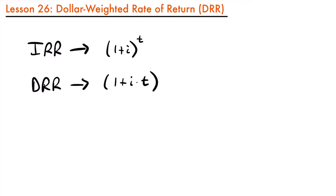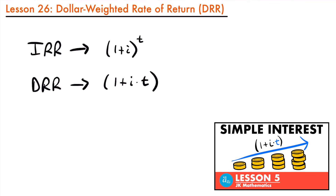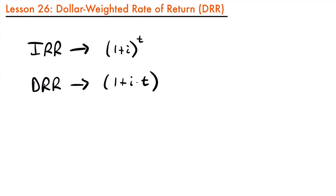If you're not familiar with simple interest rates, we also have a lesson on that which I'll have linked here. But if you are familiar with simple interest rates and the accumulation factor for simple interest, then calculating the dollar-weighted rate of return is actually a fairly simple process. For a scenario where we have an investment fund or an account of some kind, and we are given the initial balance, any cash flows, and the final balance of that fund for a particular year, then we can calculate the dollar-weighted rate of return.